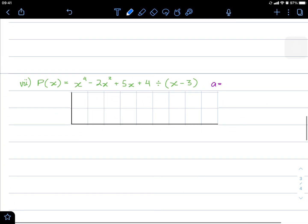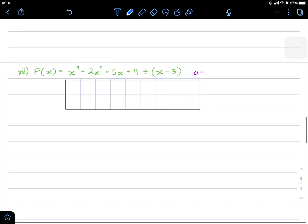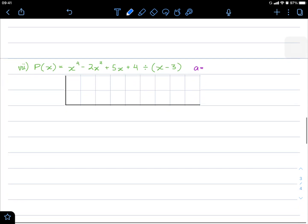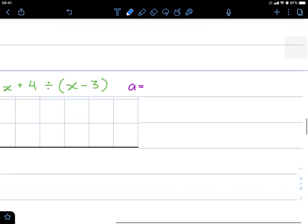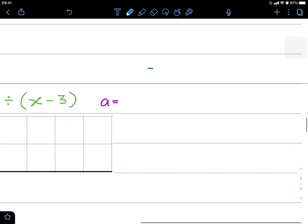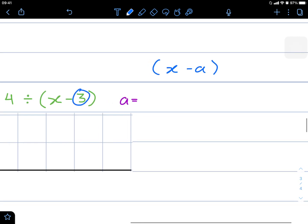For our last example, I want you to really give this a go. Pause it and give it a go yourself. So remember, we always need it to be of the form x minus a. In this case, our value of a is again 3.